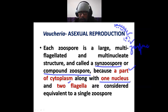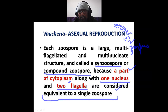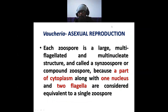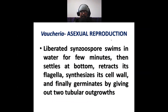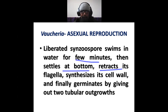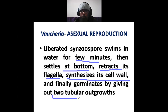A part of cytoplasm along with one nucleus and two flagella is considered equivalent to a single zoospore. That is why it is called a compound zoospore. The liberated zoospore swims in water for a few minutes, then settles at the bottom, retracts its flagella, synthesizes its cell wall, and finally germinates by giving out two tubular outgrowths.